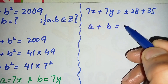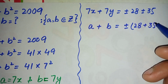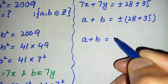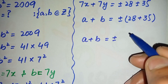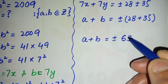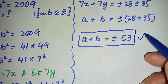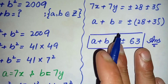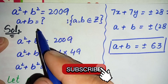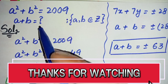Coming back to our substitution where a equals 7x and b equals 7y, we replace 7x and 7y with a and b. So a plus b equals plus or minus 28 plus or minus 35, which gives a plus b equals plus or minus 63. This is one of the possible solutions and values of this math problem. Don't forget to subscribe to our YouTube channel for more interesting step-by-step math videos. Thank you so much for watching, take care, see you in the next video, bye bye.